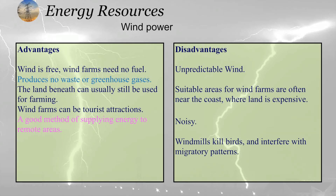The disadvantages: the wind is unpredictable because it is not always the same. Suitable areas for wind farms are often near coastal regions where the land is also expensive. Wind farms are also noisy and can interfere with the migration pattern of birds.